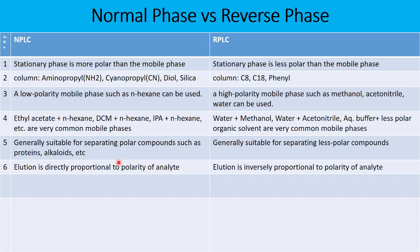The elution order in reverse phase is inversely proportional to the polarity of the analyte. If your analyte is polar, it will have a low retention time in reverse phase liquid chromatography. If your analyte is non-polar, it will have a high retention time in reverse phase — that is the basic difference between normal phase and reverse phase.